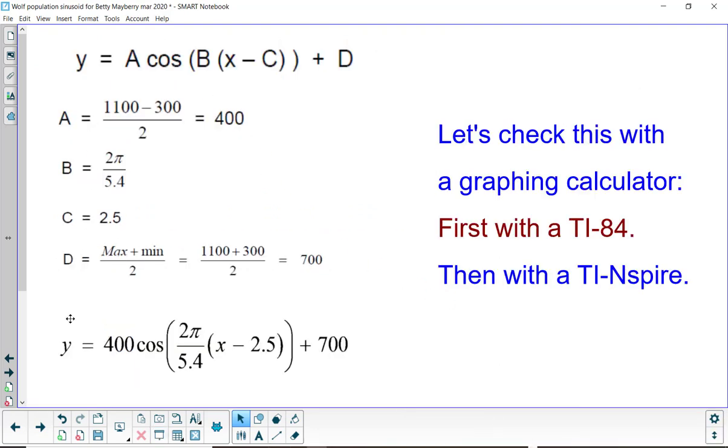Summarizing, here are our values for A, B, C, and D. And our equation substituting those in is 400 times the cosine of the quantity 2 pi over 5.4 times the quantity x minus 2.5, double parentheses, and then outside plus the 700. We're going to show this with a TI-84 first. And later in the video, it will be with a TI-inspire.